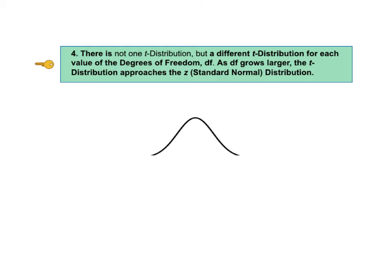Key to understanding number 4 says there is not just one t distribution, but a different t distribution for each value of the degrees of freedom, df. As df grows larger, the t distribution approaches the z, which is the standard normal distribution.